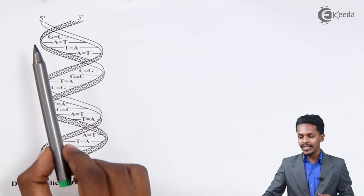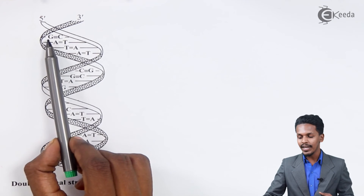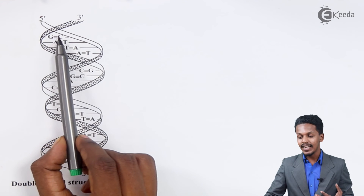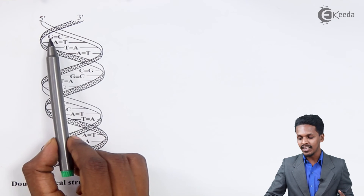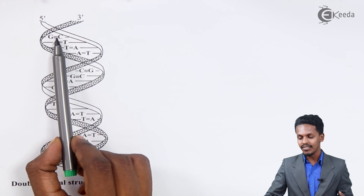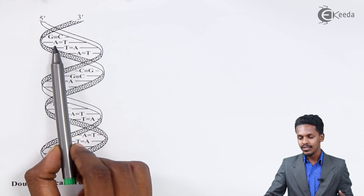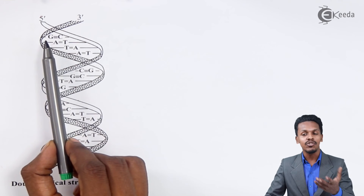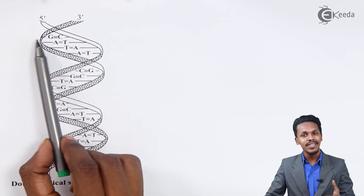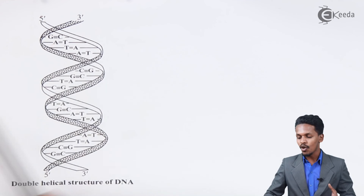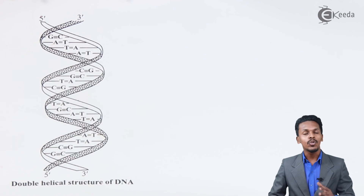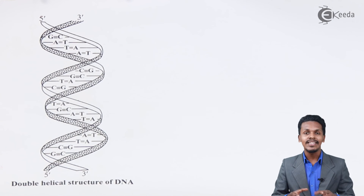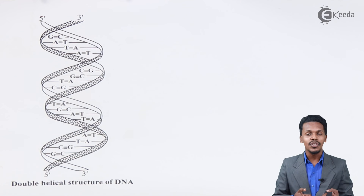Guanine and cytosine have hydrogen bonding between them — there are three hydrogen bonds. The double line or triple line in the diagram represents hydrogen bonding between the two bases. That is how the two alpha helix structures are held together.